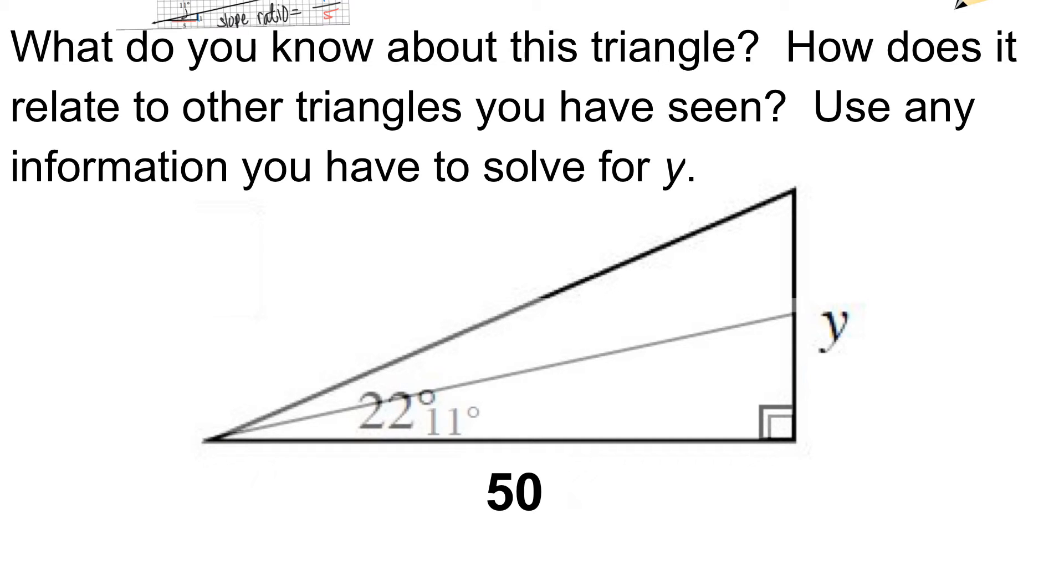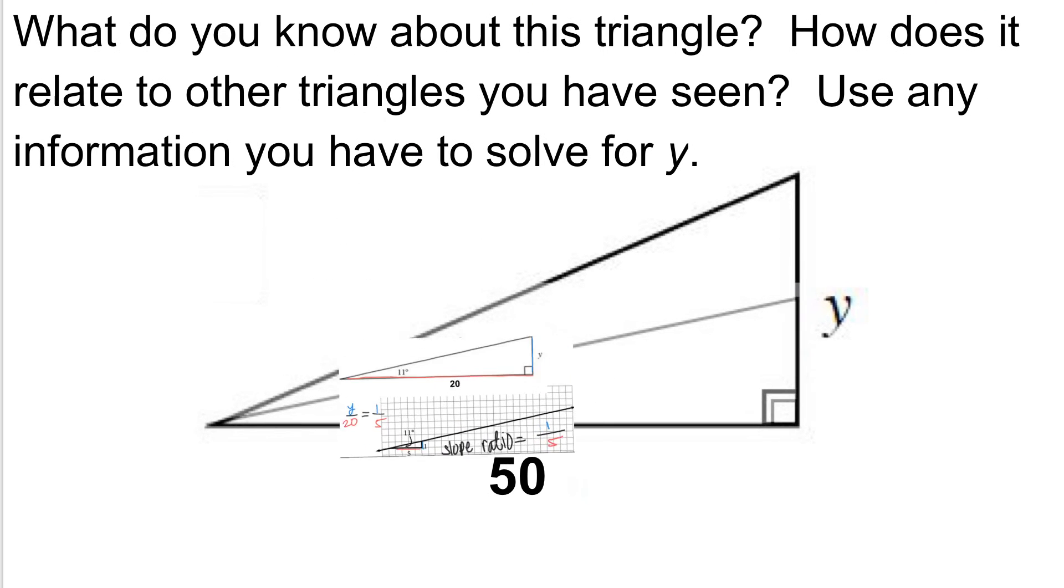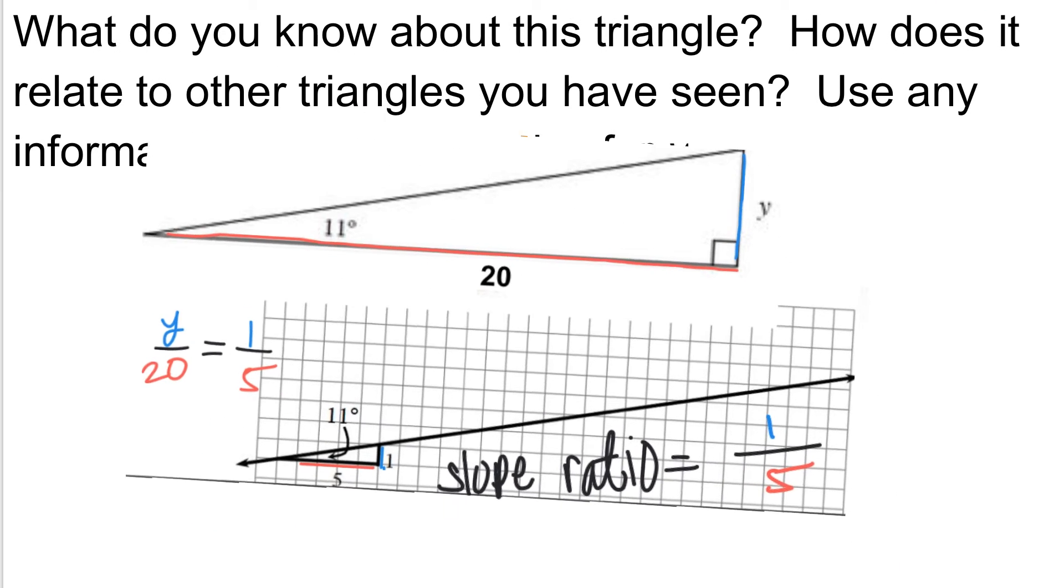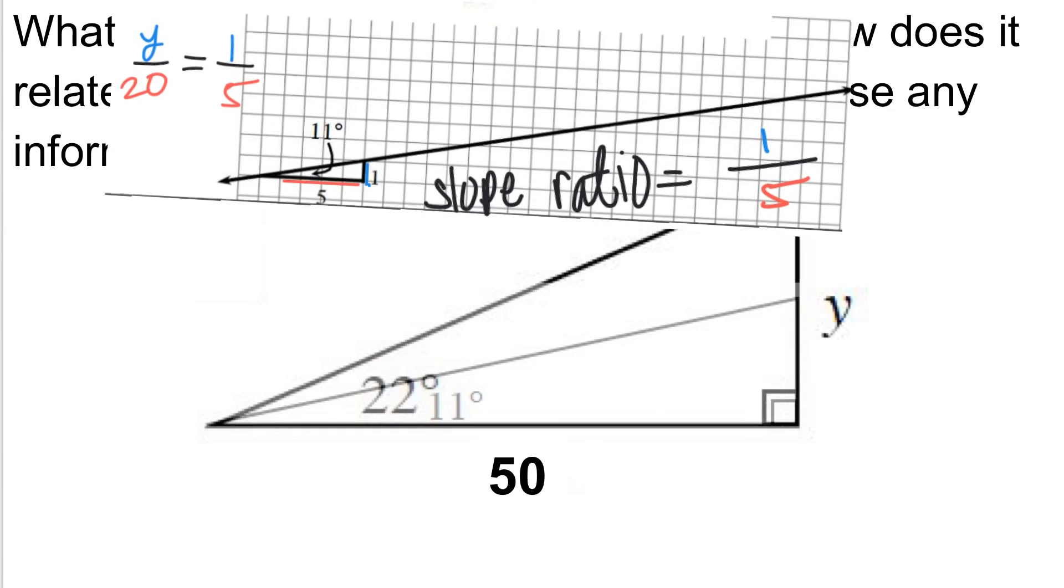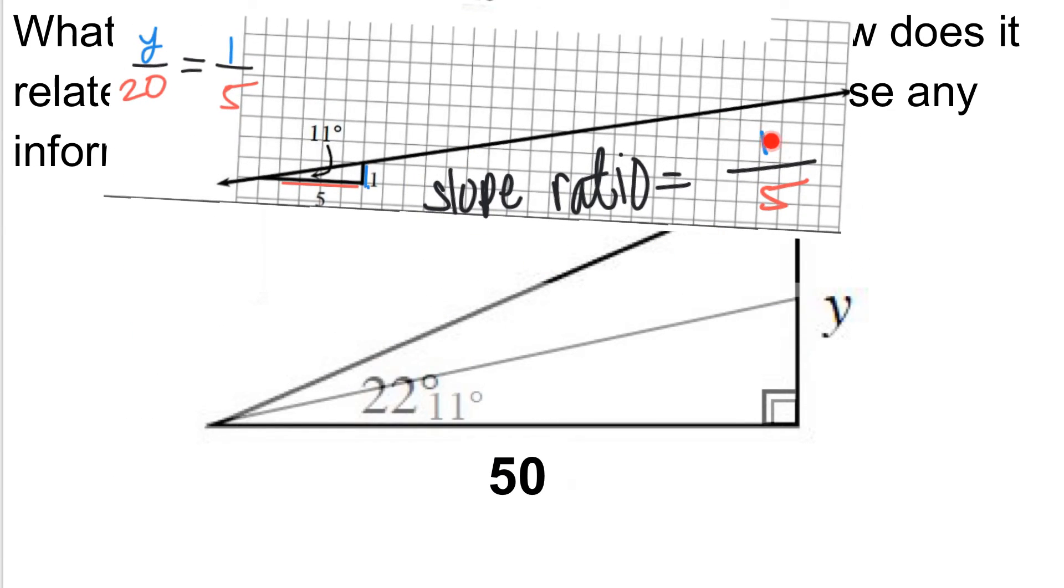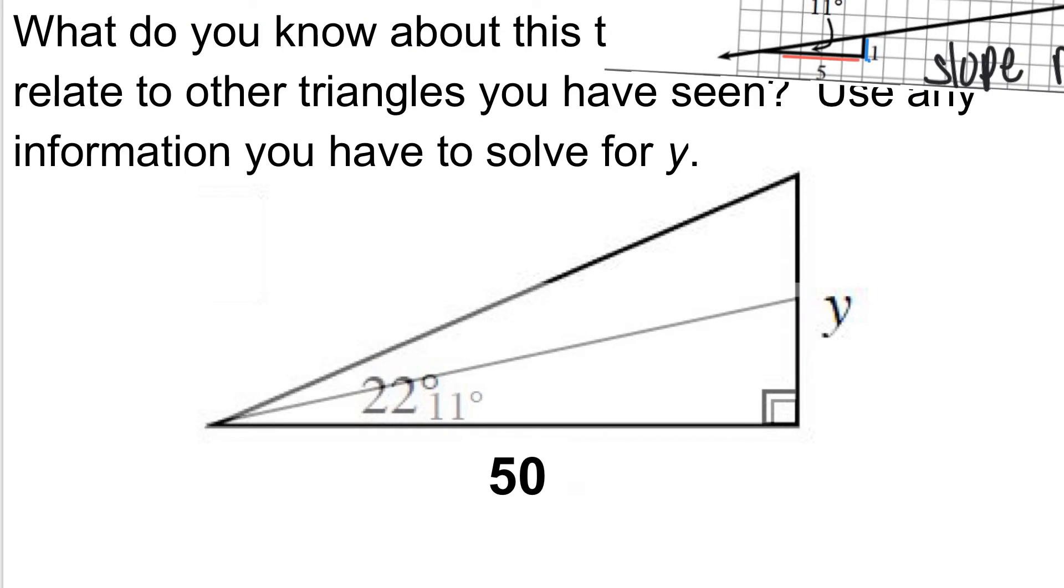Give you a few seconds to kind of think about that. When we're talking about the 11 degree angle, our slope ratio was 1 over 5. So I'm going to say that for 11 degrees, my slope ratio was change in Y over change in X equals 1 over 5. So let's think about this a little bit more. In this case I have 22 degrees.